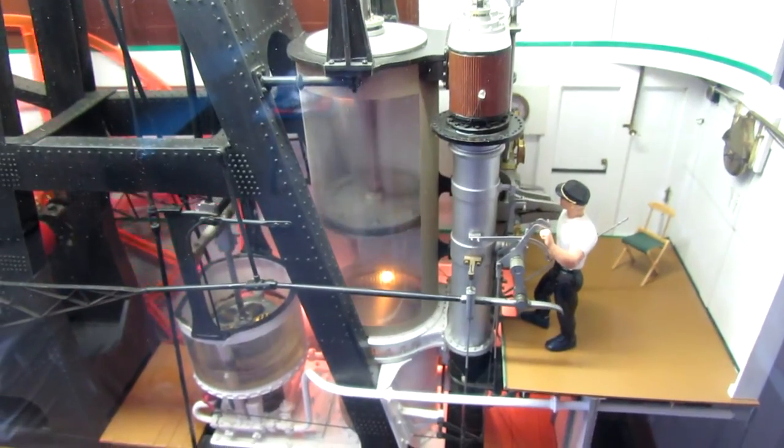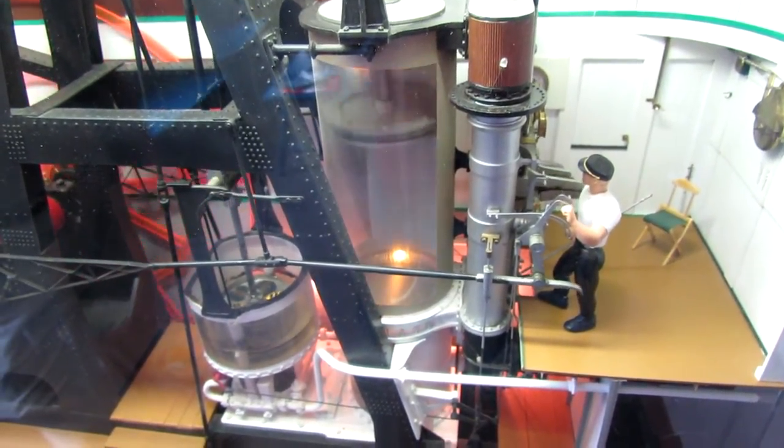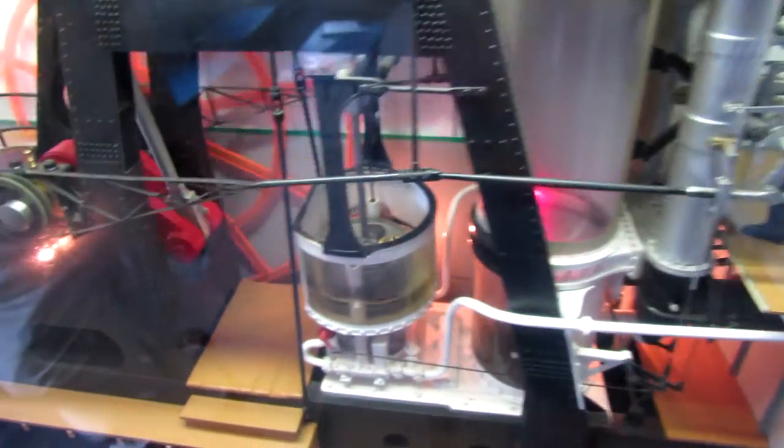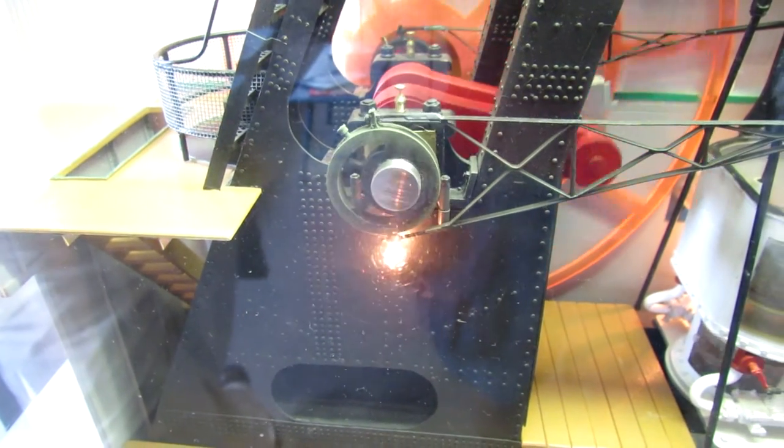The valves that direct the live steam into the cylinder and the exhaust steam out are controlled by the eccentric that goes from the paddle wheel shaft to the valve mechanism in the engineer's controller.